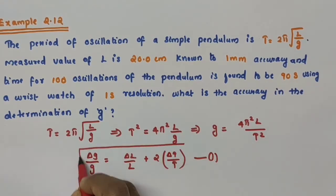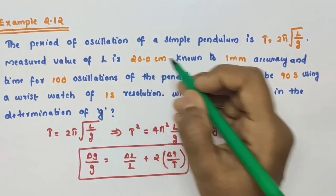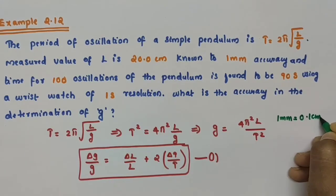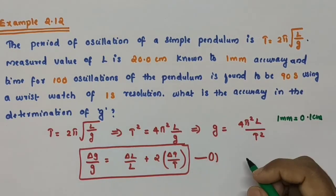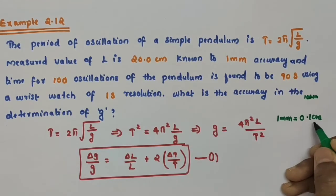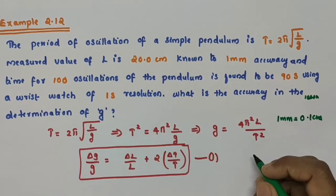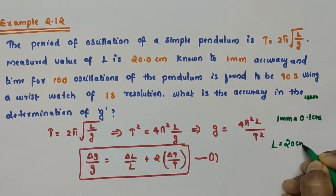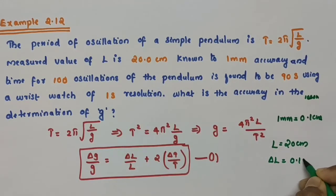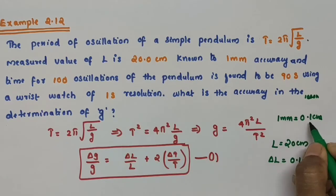Now, the length L is given as 20.0 cm with 1 mm accuracy. This 1 mm is equal to 0.1 cm. So length L = 20 cm, and the error δL = 1 mm = 0.1 cm. We converted mm into cm because L is expressed in cm.